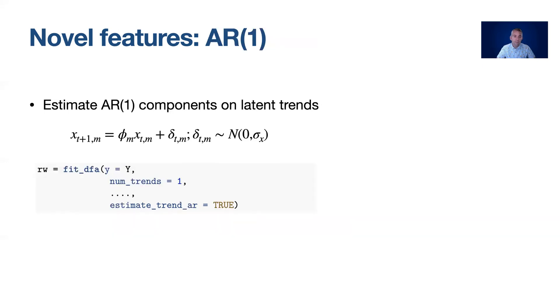The second novelty is instead of just modeling those latent random walks as random walks we can model them as autoregressive processes by adding this phi parameter. Each trend in our model gets a separate unique phi and we can turn those on and off with the estimate_trend_AR argument.